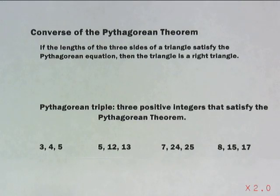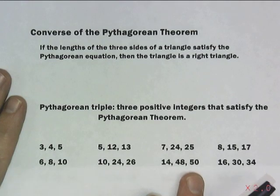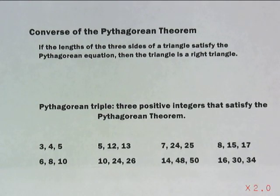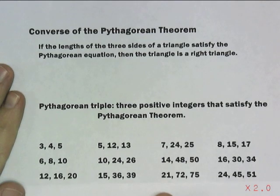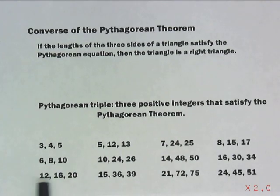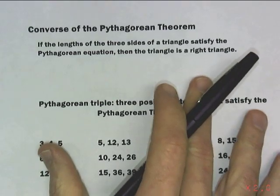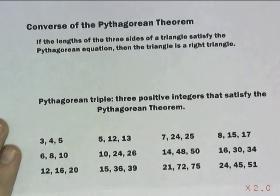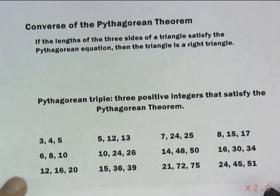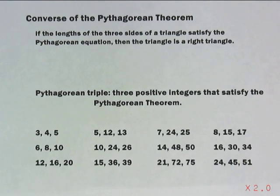And you can see that this looks like it may go on. As a matter of fact, I could go on 6, 8, 10, 10, 24, 26, 14, 48, 50, 16, 30, 34. And do you notice something? I could keep on going, keep on going. As a matter of fact, you might think, is there an end to my list? And indeed, there is not an end to my list.